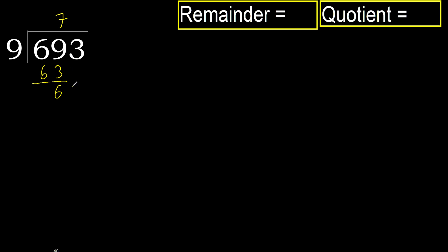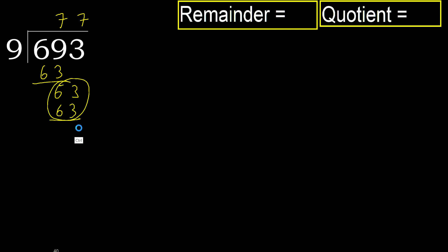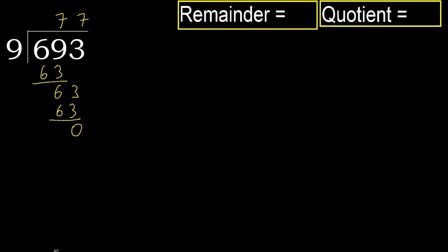Next, bring down 63. 9 multiplied by 7 is 63, which is not greater. Subtract — remainder is 0. Next, there is no next number, therefore finished.